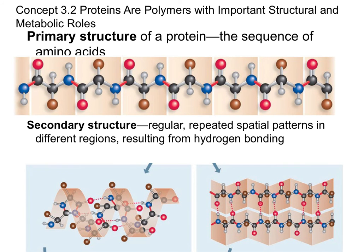You'll also need to understand that there are different levels of protein folding. Proteins are able to function because they're shaped a certain way, and the reason they're shaped that way is because they have different levels of folding. The first level of protein structure is called the primary structure, which is simply the sequence of amino acids. The order of amino acids with different R groups is going to make a difference down the line.